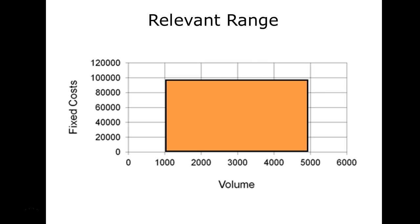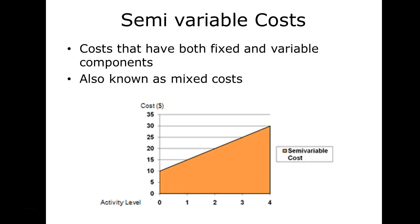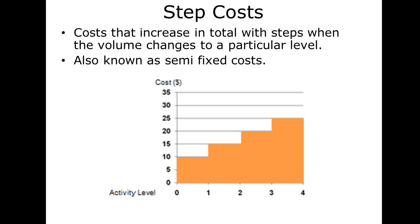The relevant range gives a visual picture of the boundaries within which cost behavior assumptions hold. Semi-variable costs have a combination of fixed and variable components — for example, an hourly worker paid for 40 hours at a fixed rate but with variable overtime is semi-variable. Step costs increase in total in steps as volume changes to particular levels; they don't go straight up but increase in incremental fashion rather than continuously.